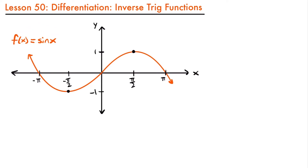Consider the sine function — you can see its graph right here. Remember that in order to have an inverse function, a function needs to have only one value of x for each value of y. If it doesn't, then we need to restrict its domain. Every trig function has an inverse relationship, but they only have an inverse if their domain is restricted. Looking at the graph of the sine function, is it true that there is only one value of x for each value of y?